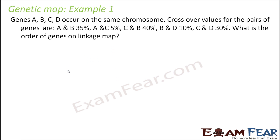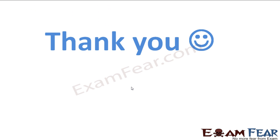Consider an example: genes A, B, C, and D occur on the same chromosome. The crossover values for pairs of genes are: A and B = 35 percent, A and C = 5 percent, C and B = 40 percent, B and D = 10 percent, and C and D = 30 percent. The question is: what is the order of genes on the linkage map?